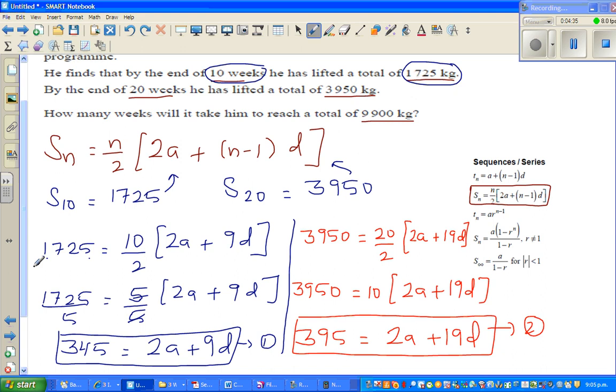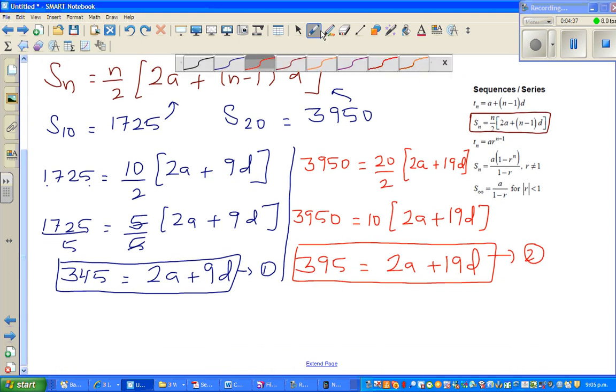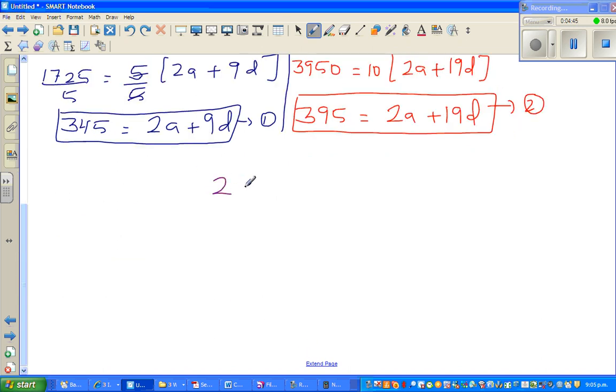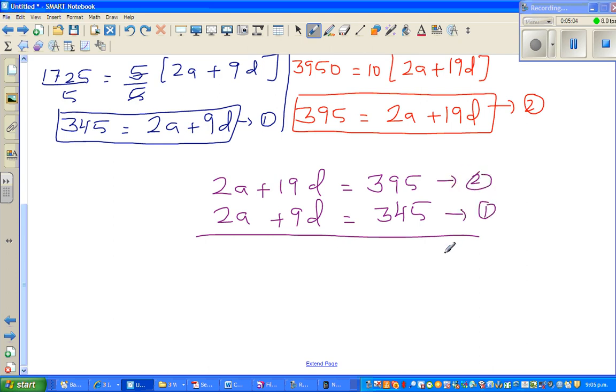So this has become a simultaneous equation. I'm going to write the bigger equation first: 2a plus 19d equals 395, and 2a plus 9d equals 345. In this step I'm going to do equation 2 minus equation 1.